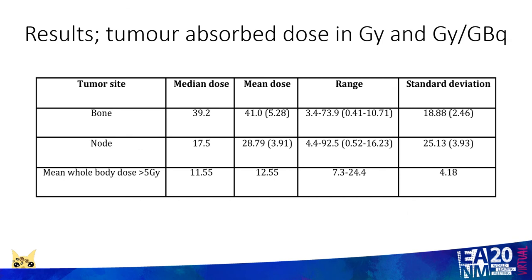In terms of tumour absorbed dose, there is again very wide variability in absorbed dose between patients — in bone and within lymph nodes — with somewhat less variability looking at the mean whole body absorbed dose, which was greater than 5 Gray for most patients, but again with significant variability between individuals.